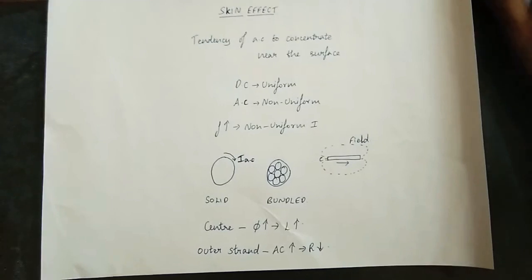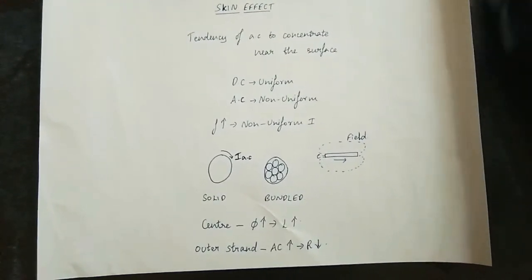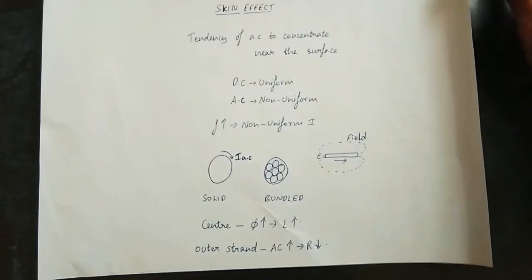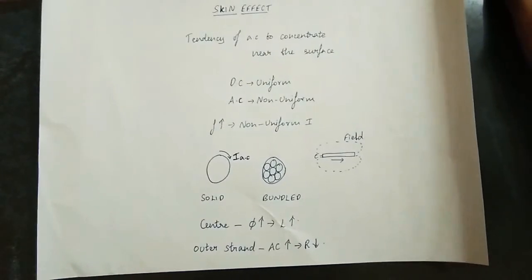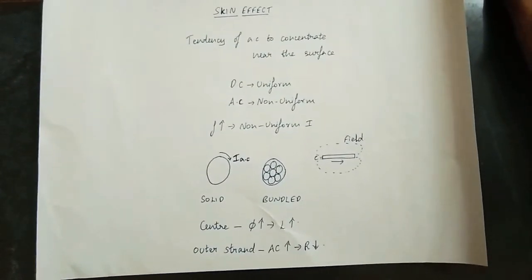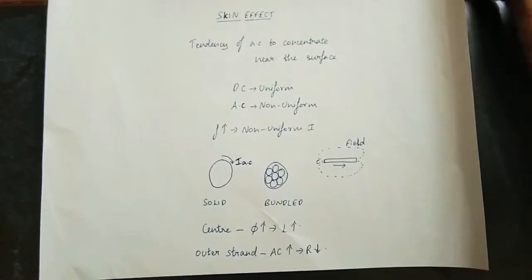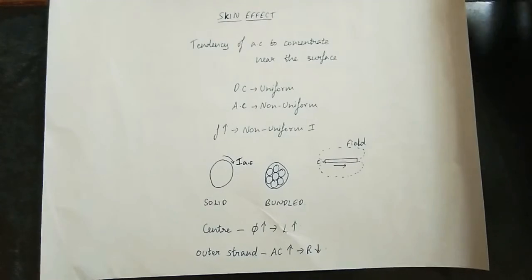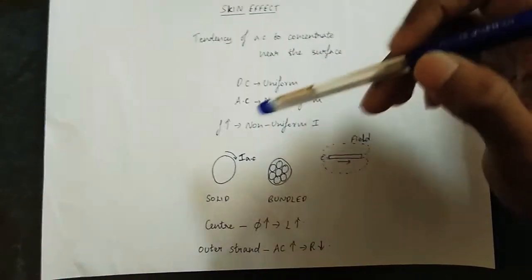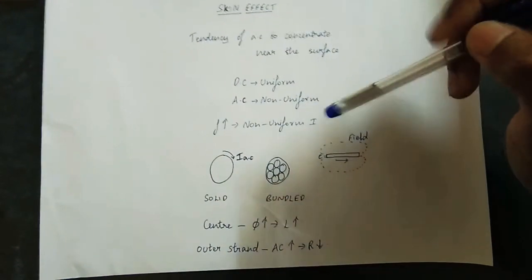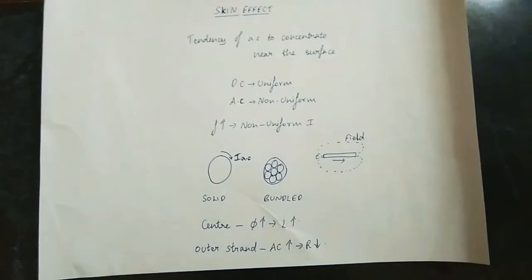You can see it in the center. In DC, the current is uniform. DC has a fixed frequency. The skin effect becomes major as frequency increases. The non-uniform current increases and the skin effect becomes significant.